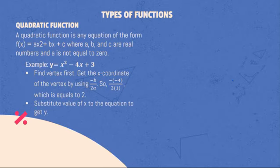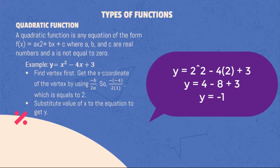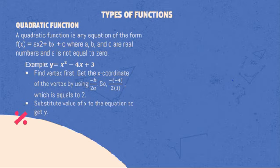To plot this function, we have to find the vertex first. To get the x coordinate of the vertex, we can use the formula -b/(2a). By substituting the values onto the formula, the x coordinate of the vertex is equal to 2. Now that we have the value of x, we can get the corresponding y coordinate by substituting this value to the equation. 2² is 4, minus 4 times 2, plus 3 is equal to -1.